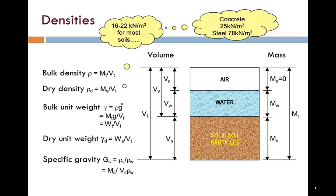The specific gravity GS is the relative density of the solid particles themselves. In other words, the density of the particles divided by the density of water.